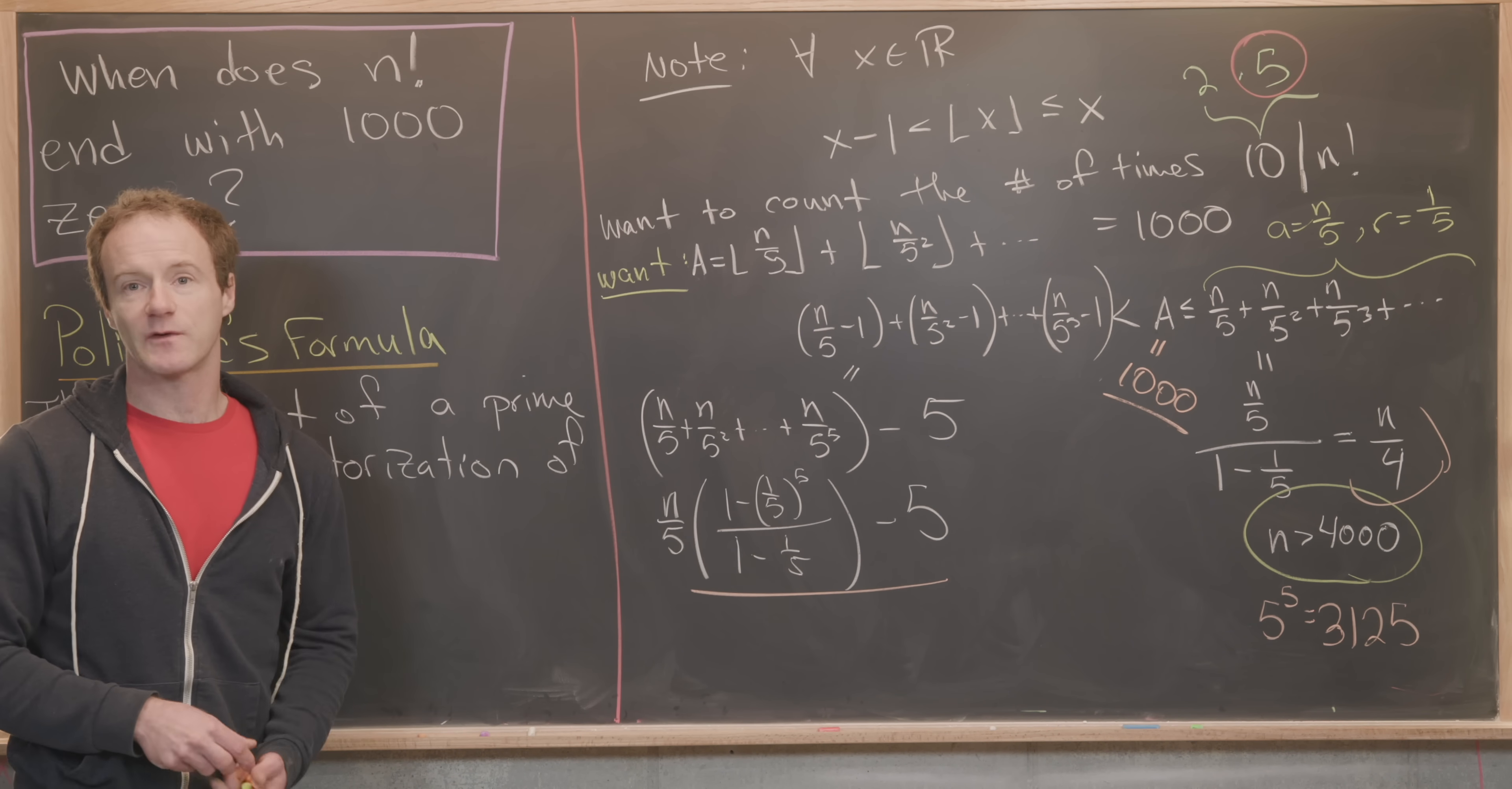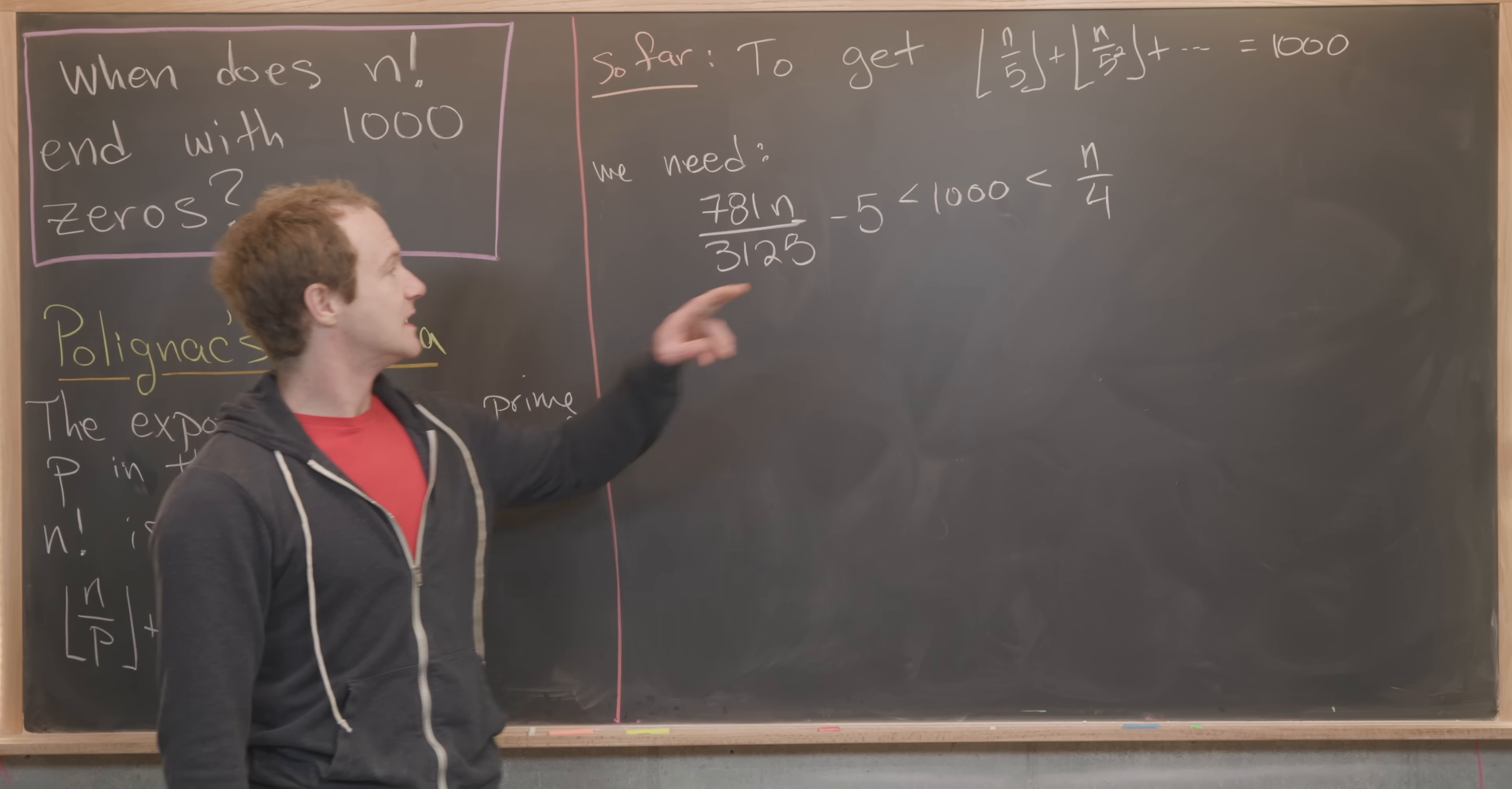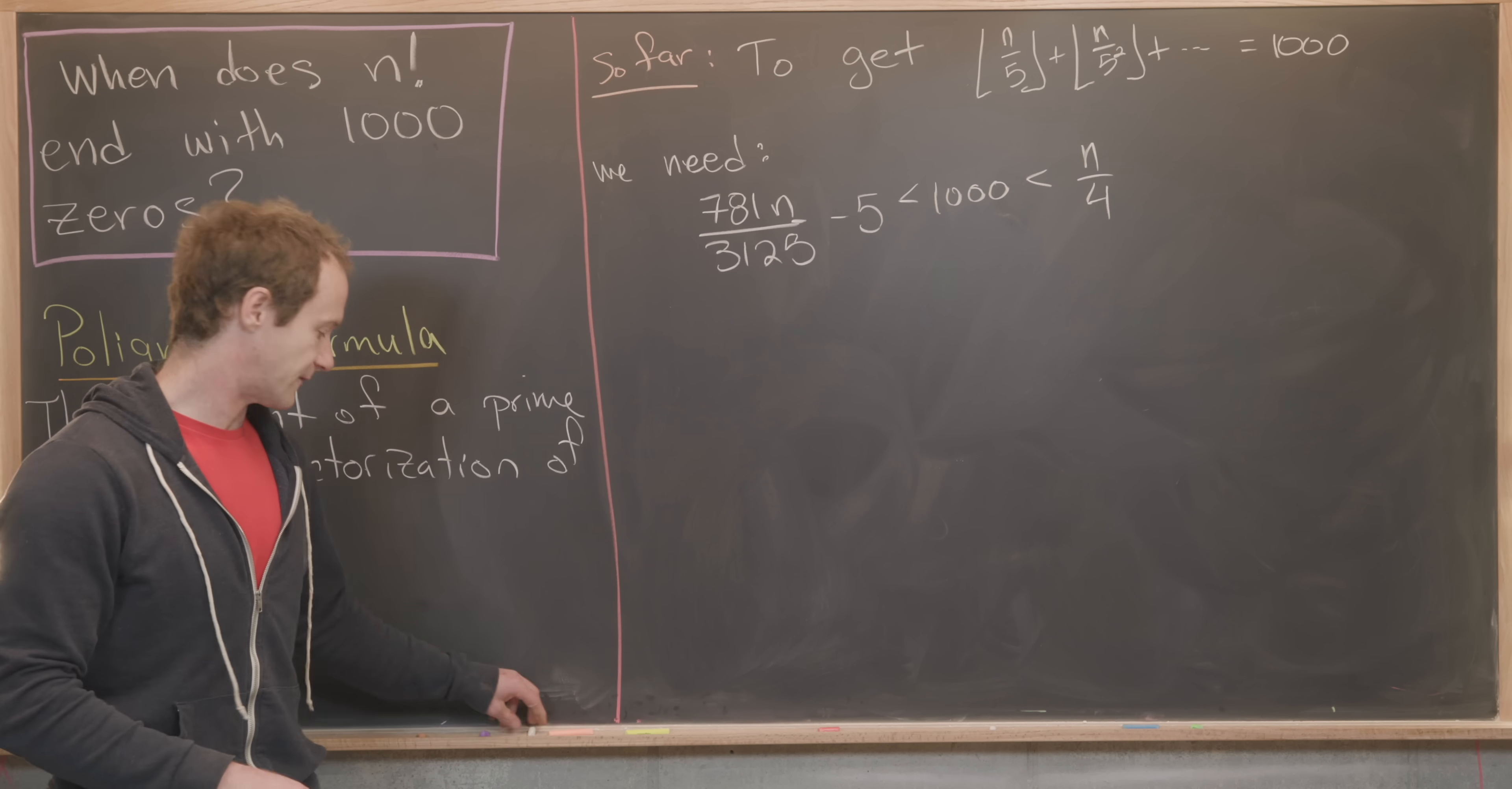On the last board, we used an inequality to figure out if our goal object was equal to 1000, which made the number of zeros at the end of n factorial equal to 1000. We needed 1000 to be bigger than 781 times n over 3125 minus five. That's a simplification of the left hand side of inequality from the last board. And it had to be less than n over four.